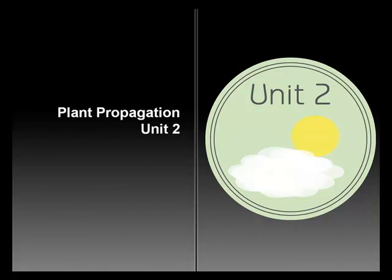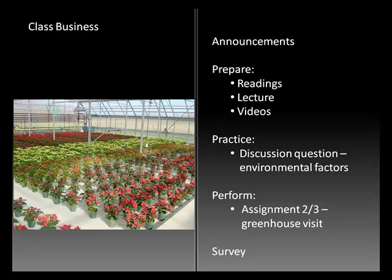This is Jeff Weiss with part one of a series of two lectures for unit two in plant propagation. This unit will begin to talk about the growth environment, the propagation environment for plant propagation, and we'll start out by talking about class business, the readings for this assignment, and next will be a long chapter — chapter three in the Hartman's text. You'll have two parts of this lecture.